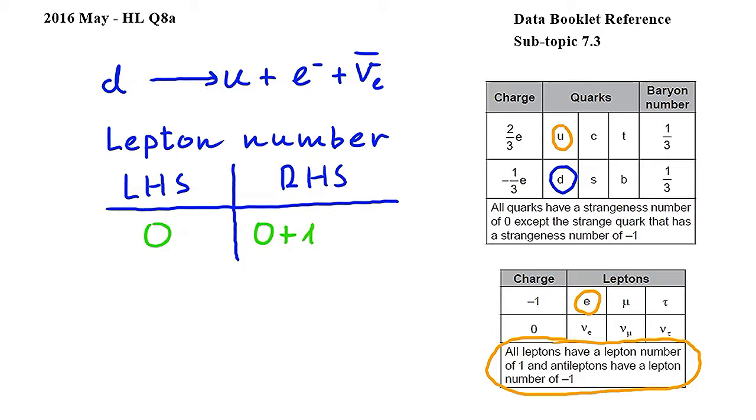Finally, we have an electron antineutrino. In our table, we do not have an electron antineutrino, however, we have an electron neutrino. This means that the electron antineutrino is an antilepton. We also see in this table that antileptons have a lepton number of negative one. This means that the lepton number of the electron antineutrino is negative one.